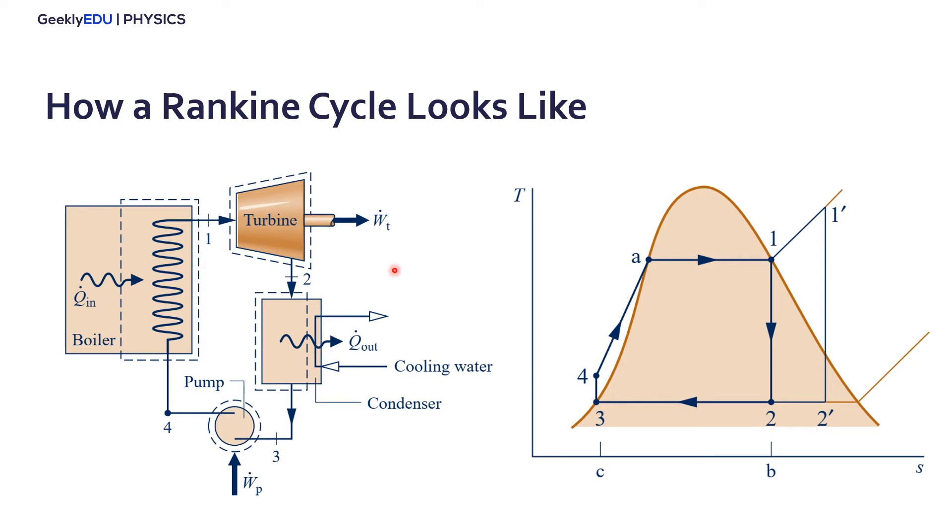We pass it through a condenser. So we exchange heat with cooling water or air or any other cooling liquid. Generally it's water but it can be another fluid. And we have a heat exchange that goes out of our system. So we decrease the temperature of our water vapor at a constant pressure. And we reach point number three.